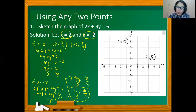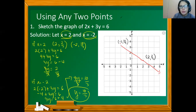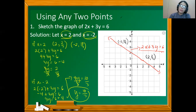After plotting the two points, we connect them and extend the line from left to right. This is the graph of 2x plus 3y equals 6. For a better sketch, use your ruler to draw the line.